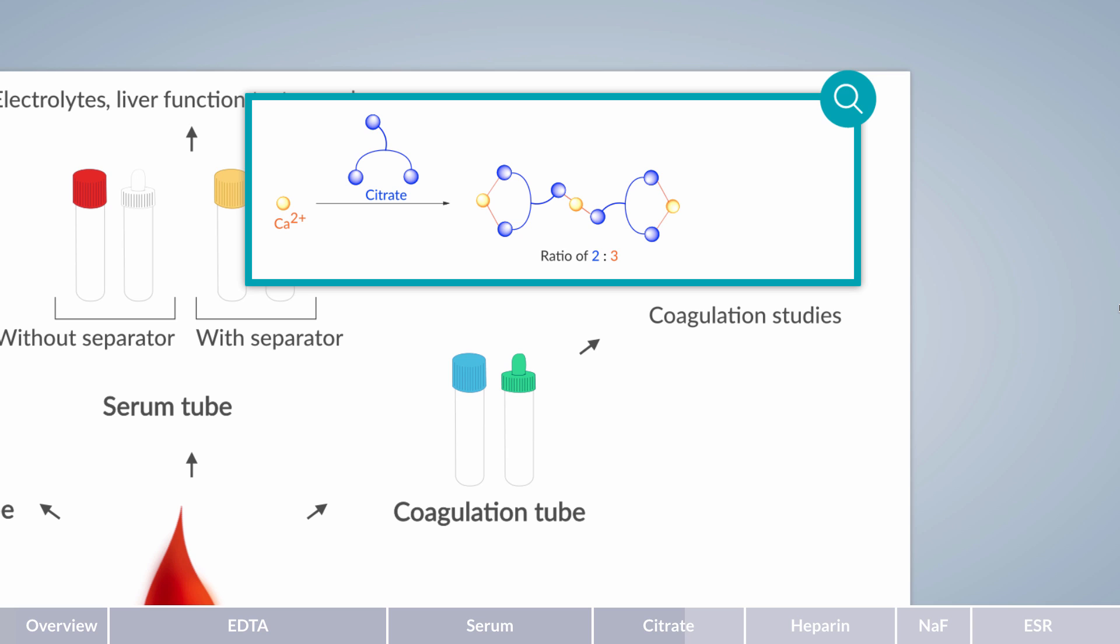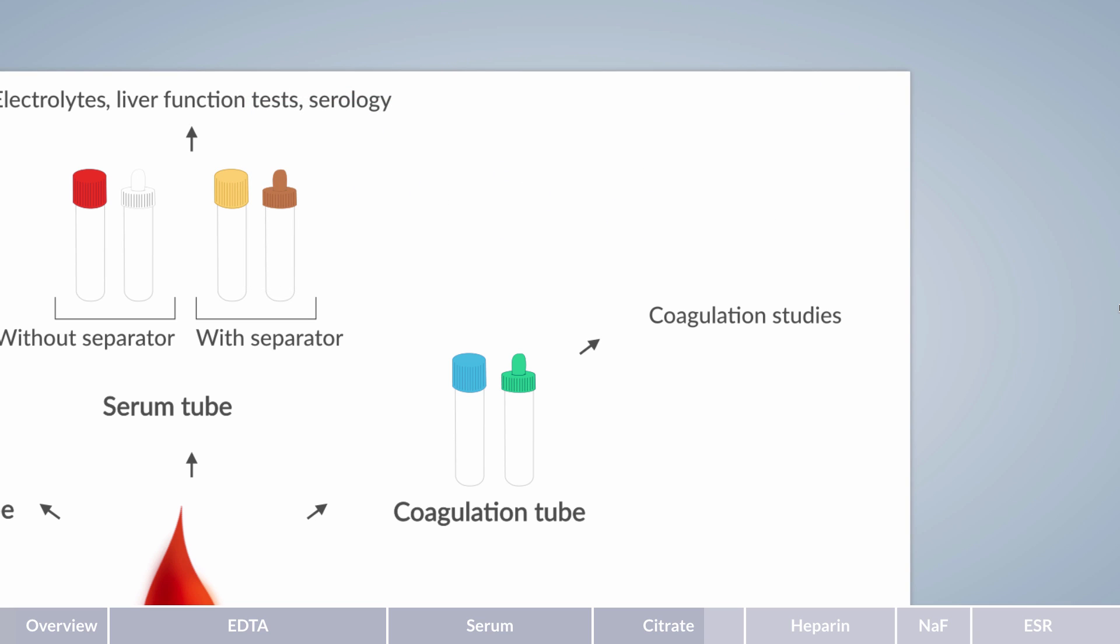Two citrate ions are able to remove three calcium ions. This enables the required amount of calcium to be added to the blood sample to restore original conditions in the collection tube. Subsequently, coagulation parameters such as prothrombin time, or PT, and activated partial thromboplastin time, in short APTT, can be analyzed.